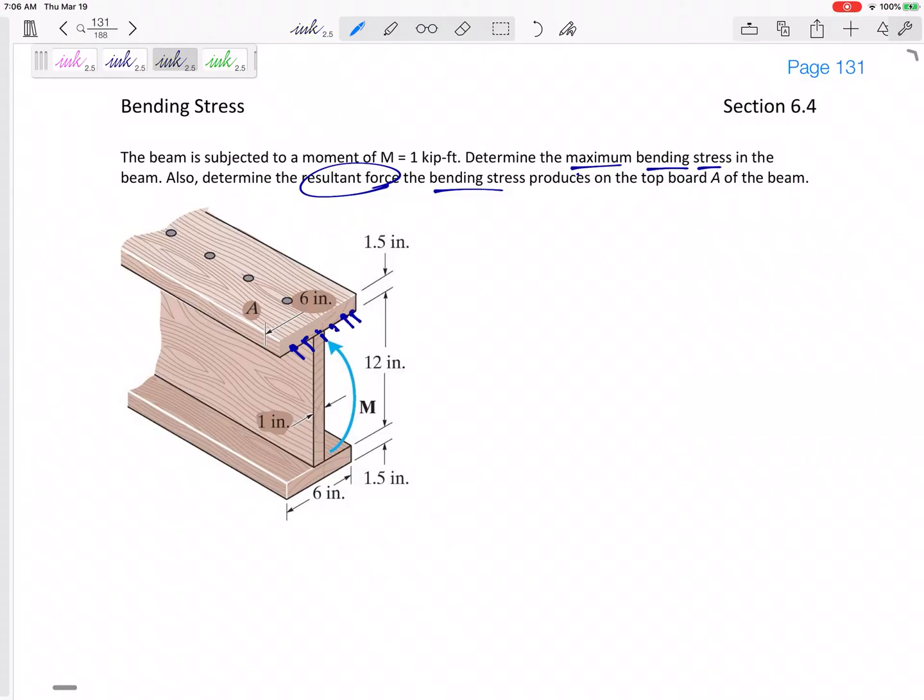Alright, so we know that bending stress is MY over I. We've got the M. The maximum would be the Y that takes it to the very, very top or very, very bottom. And then the I. They didn't give us the I. We've got to calculate the I. We've got all these dimensions right here. So let us calculate the I.